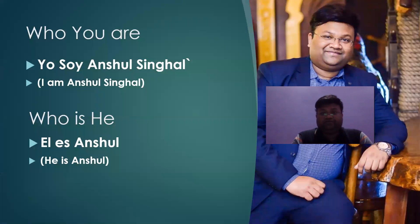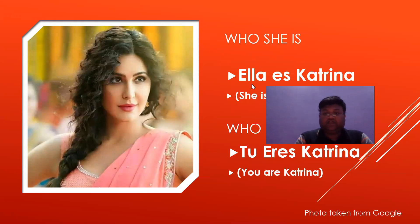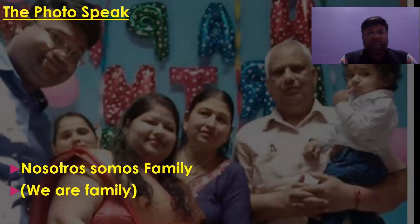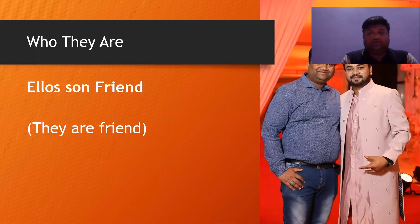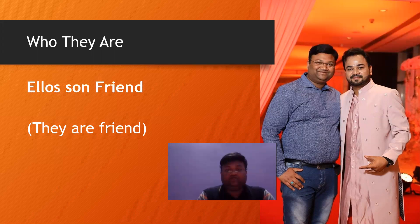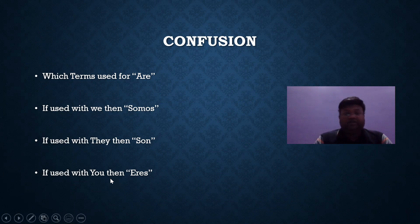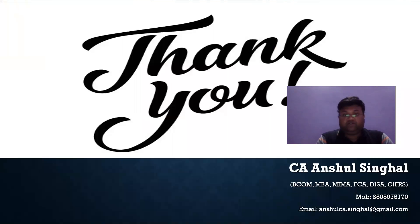To summarize all: if we use 'yo' (I), we say 'soy'. If 'tú' (you), we say 'eres'. If 'él'/'ella' (he/she), we use 'es'. If 'nosotros' (we), we say 'somos'. If 'ellos' (they), we say 'son'. For example: 'yo soy Anshul Singh', 'él es Anshul', 'tú eres Anshul', 'nosotros somos family', 'ellos son friends'. Thank you, hope you get some benefit out of this video.